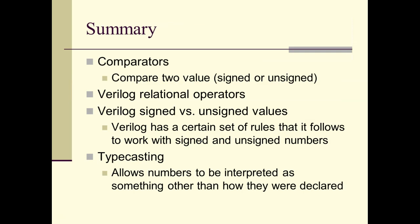That's it for comparators. We compare two values and get some status output. We can compare unsigned or signed values, but we have to model the code appropriately for whether it's unsigned or signed — there is a big difference. There are a bunch of relational operators in Verilog which we freely used for designing our comparator. The notion of signed and unsigned values in Verilog is confusing, but there are a couple of rules to follow. One of those is typecasting, which allows you to have a number interpreted as something different than it was declared — for example, you can interpret a signed number as unsigned by casting it.